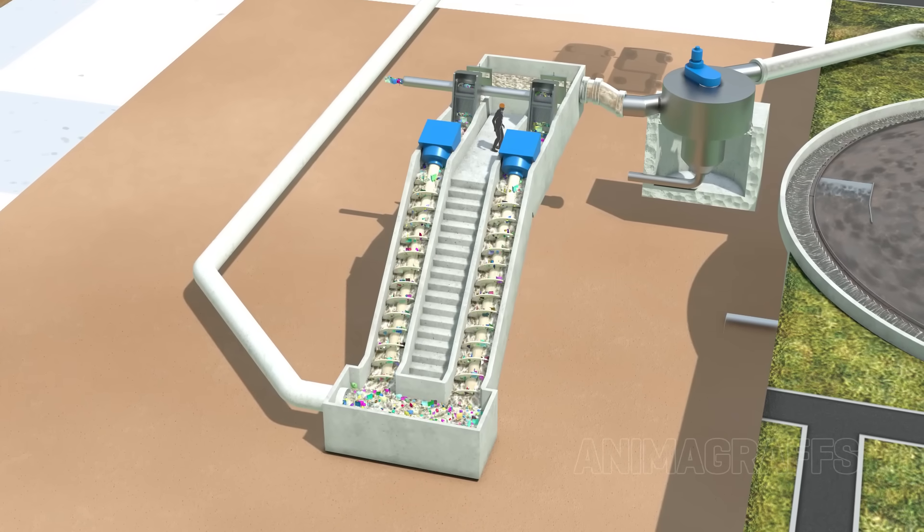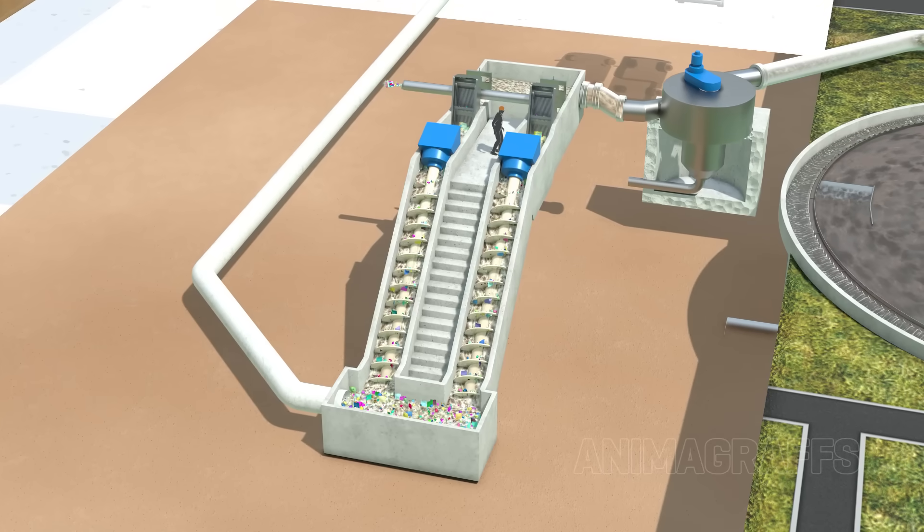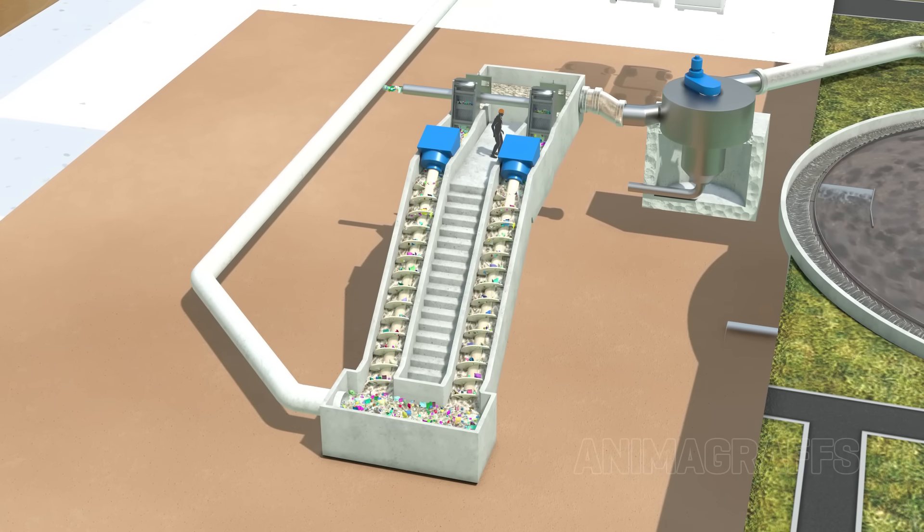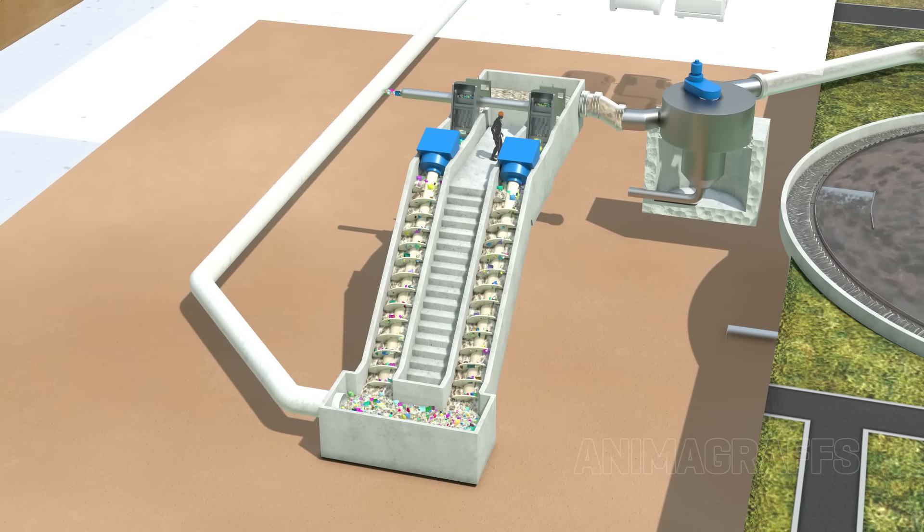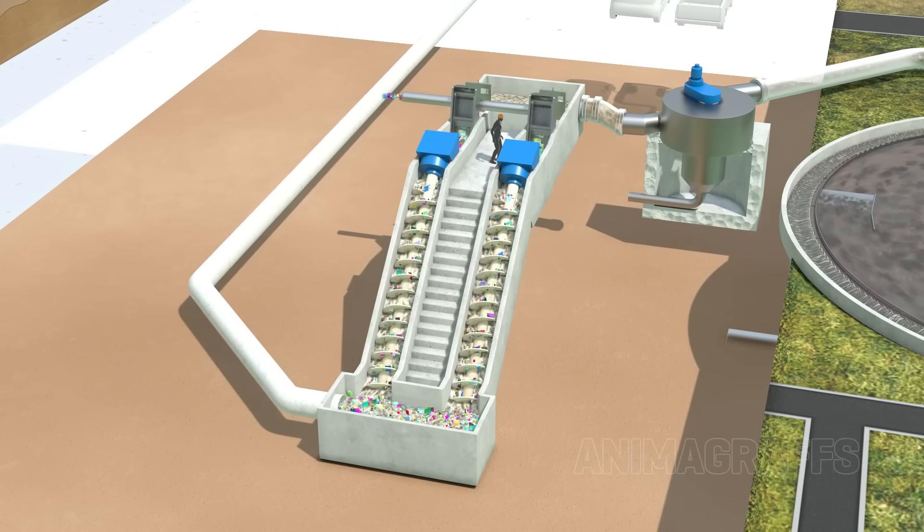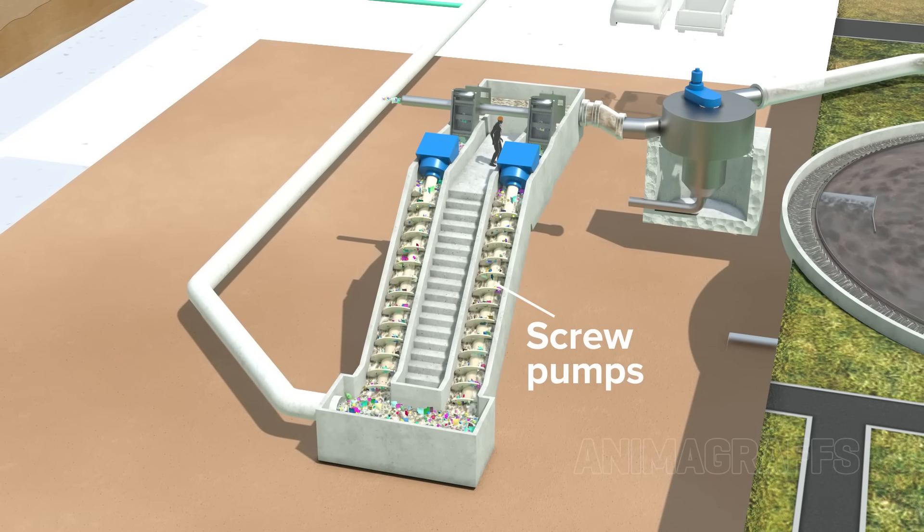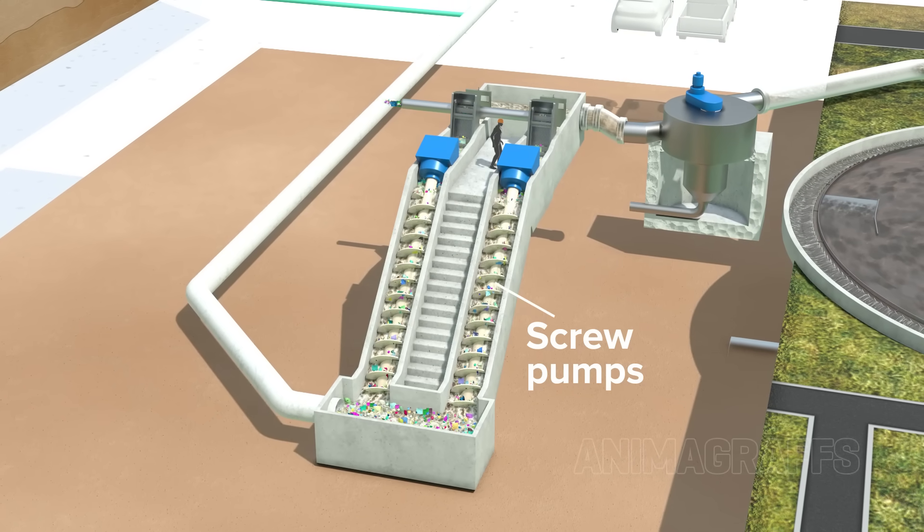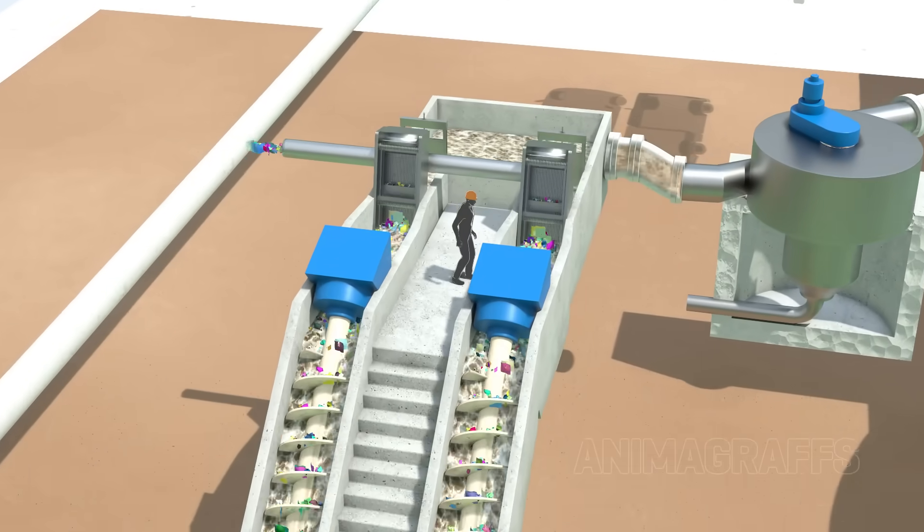Water arrives at the plant mostly by gravity. Depending on local geography, it may need to be pumped or lifted into the wastewater plant. Screw pumps are a rugged, mechanically simple design built to handle this coarse, incoming mixture.